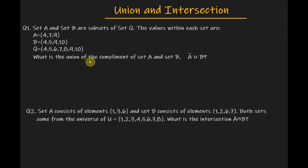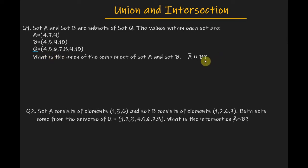What is the union of the complement of set A and set B? Q in this example is the universal set, meaning that A and B are subsets of Q. When we are talking about union, we mean combining the sets into one larger set — in our case, we will combine the complement of set A and set B.